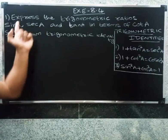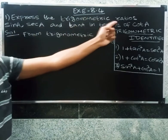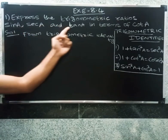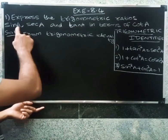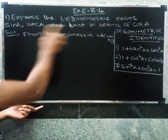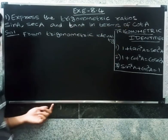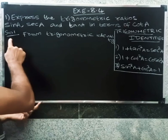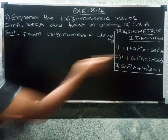The question asks: if we can express the trigonometric ratios sine a, sec a, and tan a in terms of cot a. So first, using the trigonometry identity, let us begin.